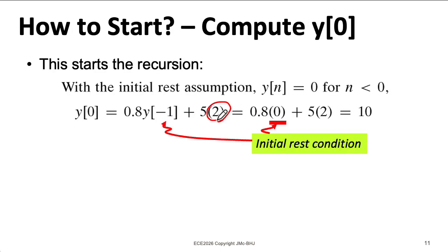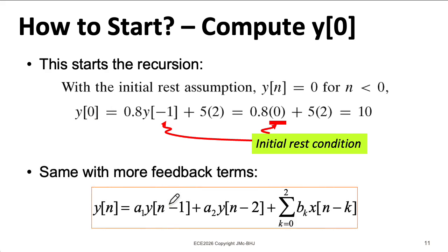Now remember, x[0] was 2. So we take 2, multiply it by 5 to get 10. And that basically provides the base case for our recursion. And if we have a higher order filter, we use the same kind of initial rest assumption. So to get y[0], we would assume that y[-1] and y[-2] are all 0. In this second order example, second order filters do some interesting things. We'll talk about that later.